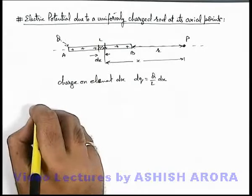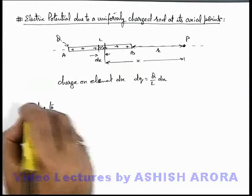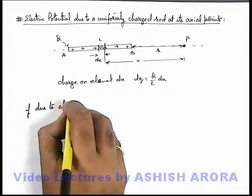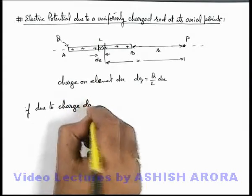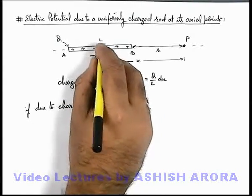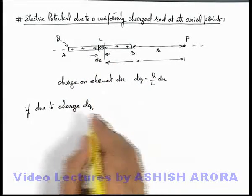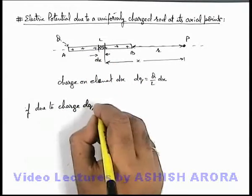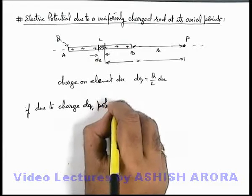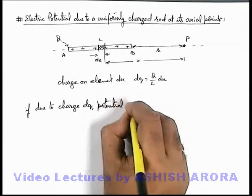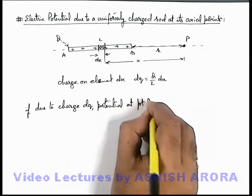Now if due to charge dq, and this dq we can consider as a point charge because dx is negligibly small, then the potential at point p due to this point charge is dv.